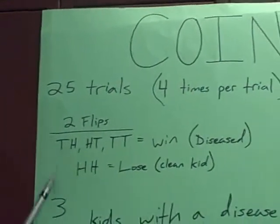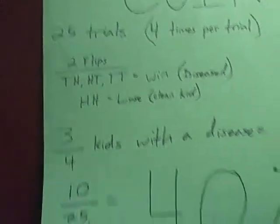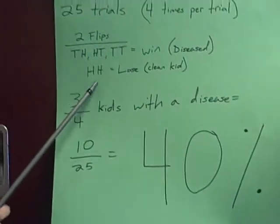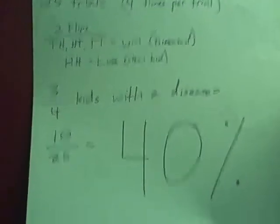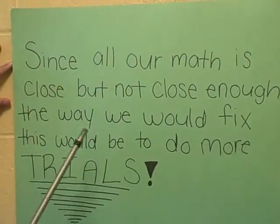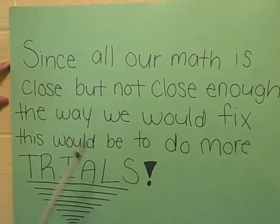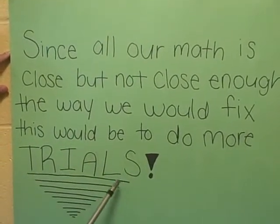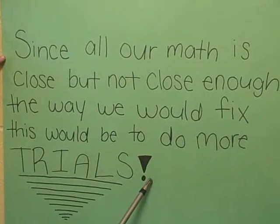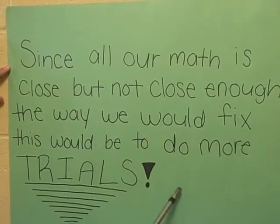Once we ran that trial, we got 10 out of 25, which comes out to be 40%. Now, since all of our results are close but not close enough, the way we would fix this would be to do more trials, so our results would be more accurate and reduce any gaps between each set of data.